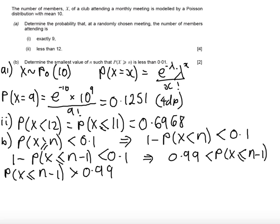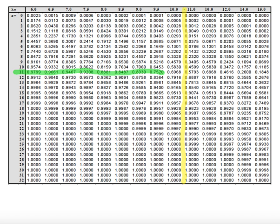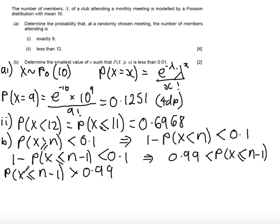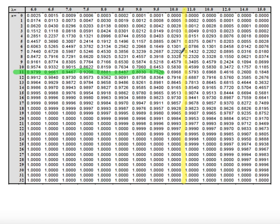Let's have a look at the tables and see if we can find the first value where P(X ≤ N-1) is greater than 0.99. If I come down the table looking for the first value which is greater than 0.99, which is here, so I'm just going to get my highlighter pen so I can read across.